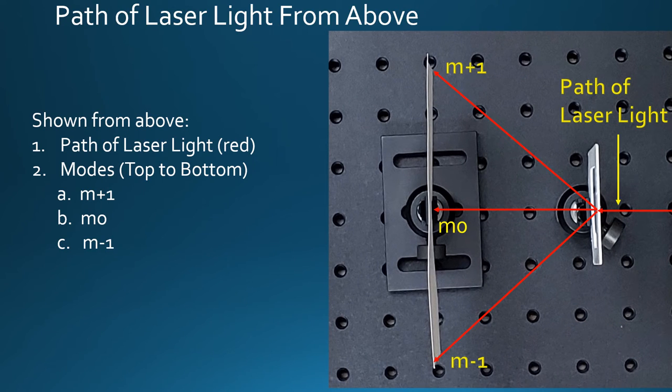In this picture, the red lines show the path of laser light from the laser through the diffraction grating and to the target. For perspective, the modes are also shown for M+1, M0, and M-1.